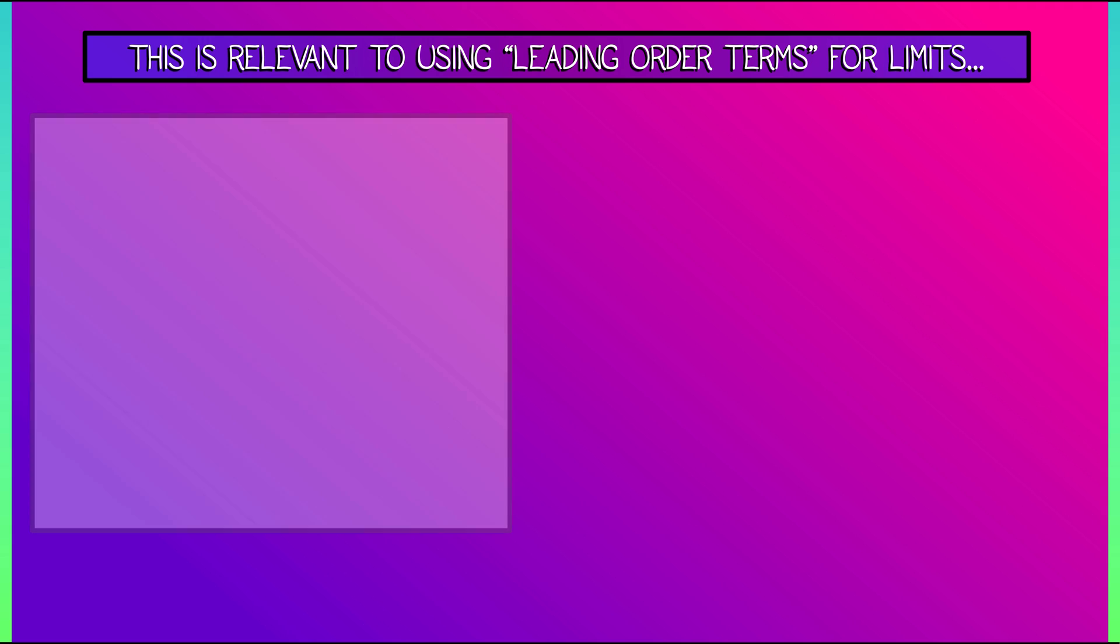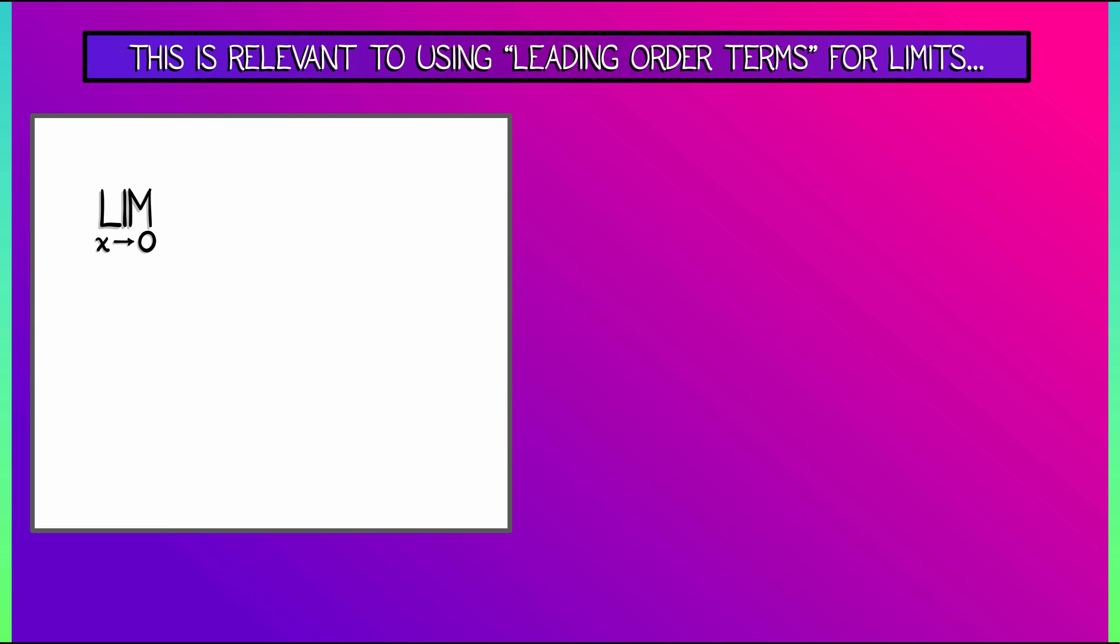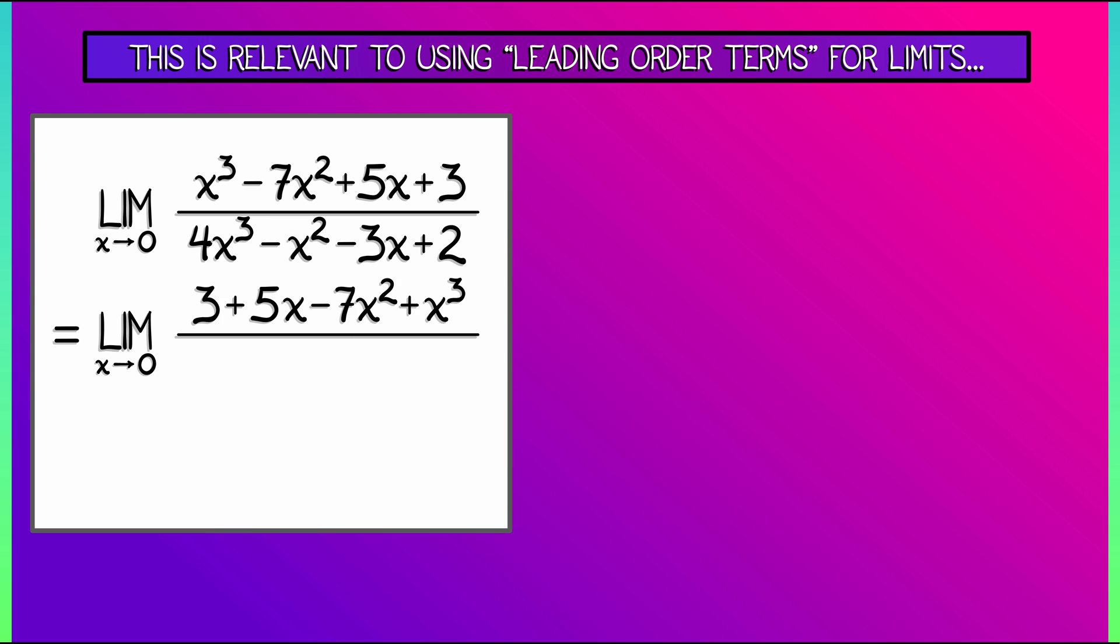Consider, for example, the limit as x goes to zero of the following rational function. Up top, we have the polynomial x cubed minus 7x squared plus 5x plus 3. In the denominator, we have the polynomial 4x cubed minus x squared minus 3x plus 2. If we're taking the limit as x goes to zero, then what I'm tempted to do in this case is rearrange those terms from lowest order to highest order. Just reverse the polynomials. That doesn't change anything, but it makes it look more like what we see when we're doing Taylor expansions.